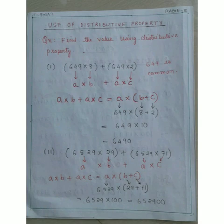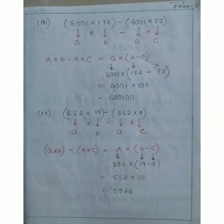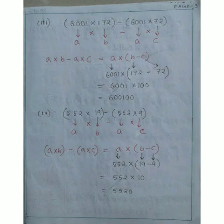In the second example: 6529 × 29 + 6529 × 71. Since 6529 is common, we assume it as A, 29 as B, and 71 as C. This gives A×B + A×C = A×(B+C), so 6529 × (29+71). Since 29 + 71 = 100, we get 6529 × 100 = 652,900.